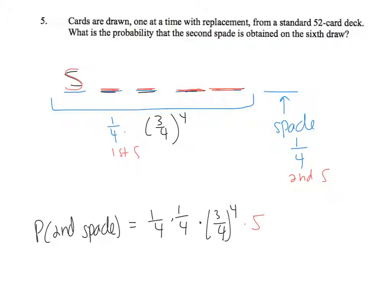So again, the first 1/4 is for my first spade. The second 1/4 is for my second spade. 3 over 4 to the 4th is for my 4 non-spades. And then 5 is for the number of places that that first spade can land. Once you multiply all of this out, you get 405 over 4096.